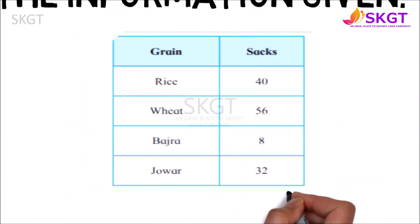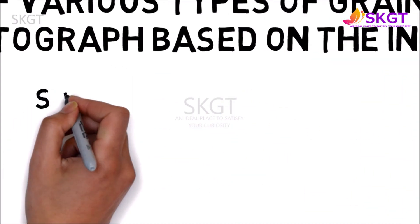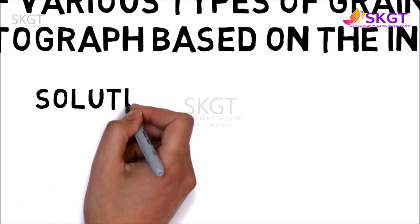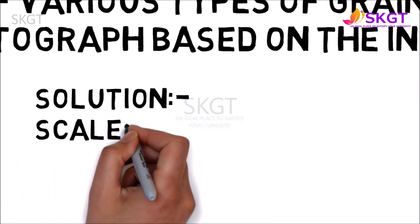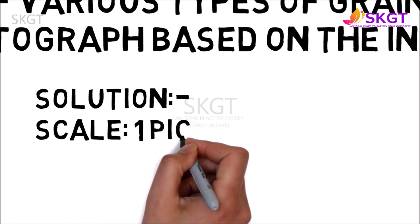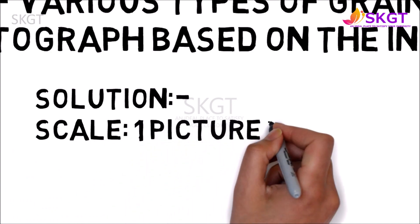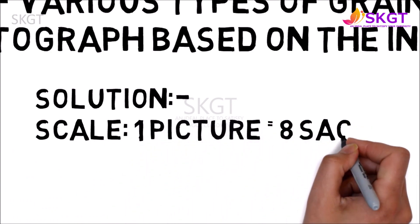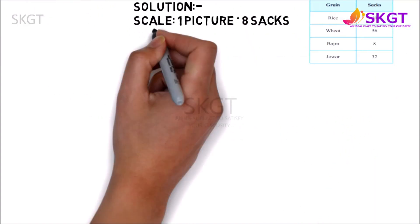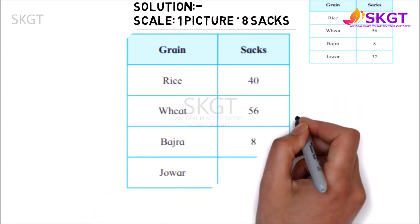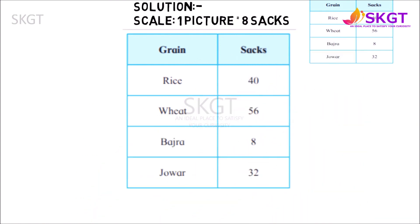This is the smallest number — what is 8? What is the solution? Scale is very important. 1 picture equals to 8. This is the answer to the following. Comment down below and show the video.